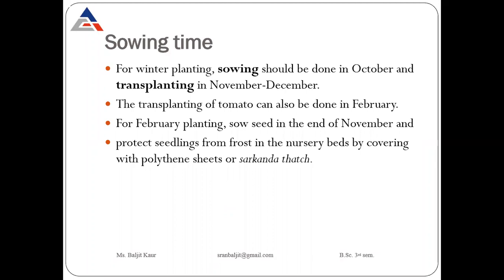Now sowing time. There are two planting times: winter planting and February planting. For winter planting, sowing should be done in October and transplanting in November–December. If we are planting tomatoes in February, then we have to sow the seed at the end of November and the seedlings are transplanted in February, as this takes more time due to November planting conditions.